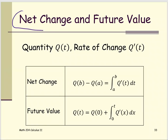The net change itself, from what we did before and from the previous example, like S at B minus S at A equals the antiderivative from A to B of S prime with respect to T.